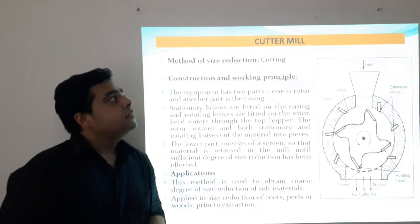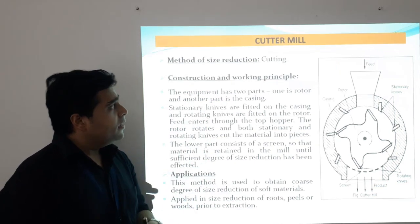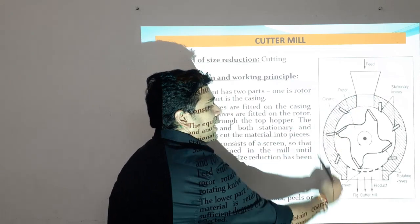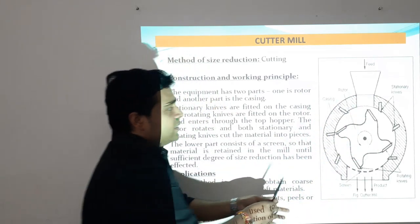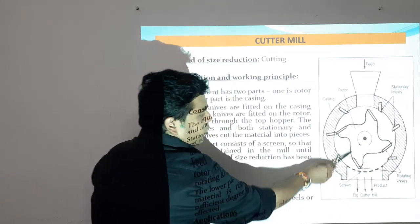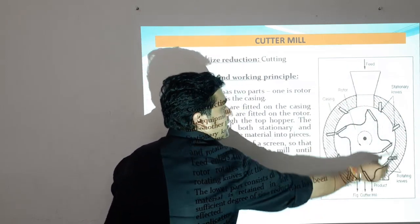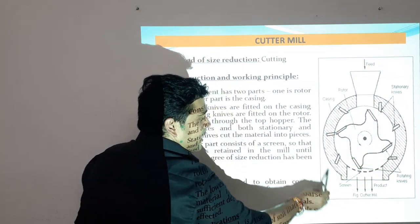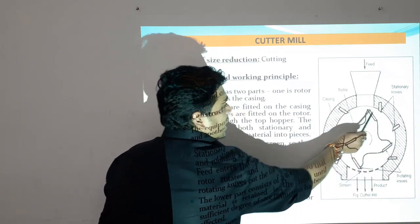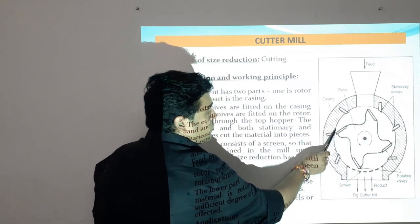Now we come to the basic cutter mill, which is a cutting machine — the method of size reduction is cutting. This is a completely enclosed mill where the rotor has knives fitted both on the rotor as well as in the casing. Feed comes through the top and enters inside this machine. In the casing, stationary knives or cutters are fixed, and on the rotor, rotating knives are fixed.